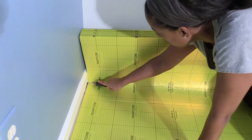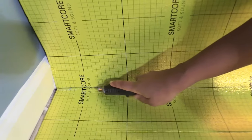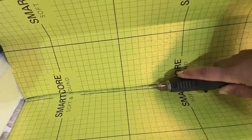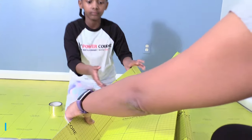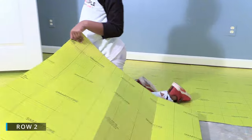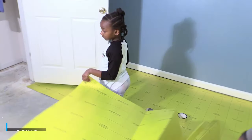The grid pattern really came in handy when it came time to make our cuts. Look at how simple it is to lay down the second row of underlayment.